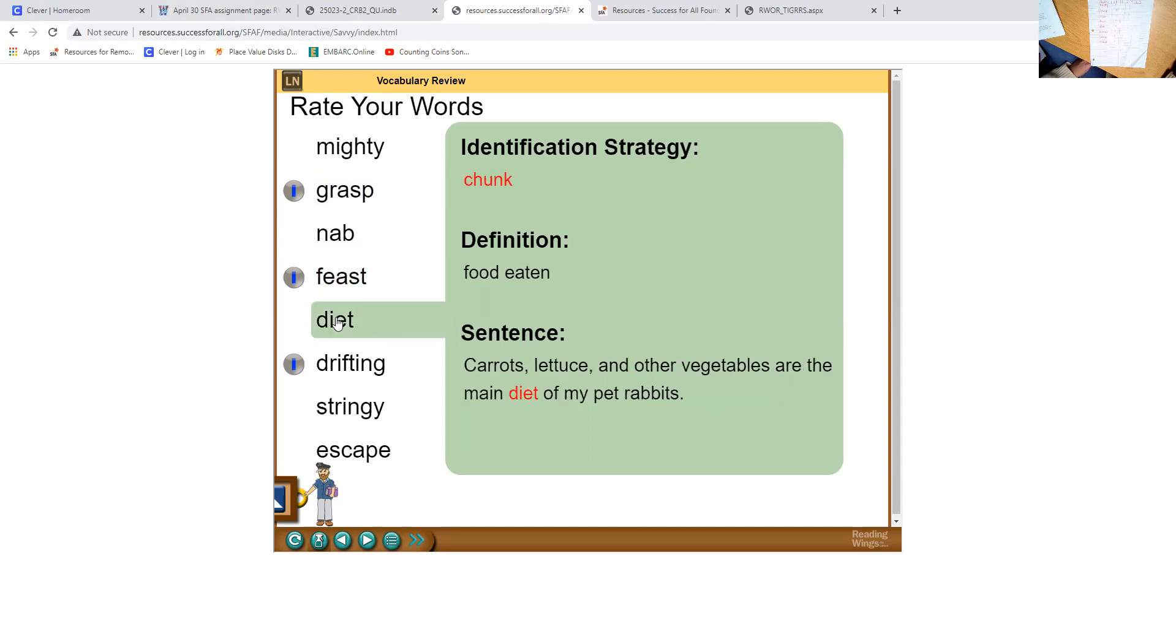Diet means food eaten. Carrots, lettuce, and other vegetables are a main diet of my pet rabbits. Drifting means floating. My helium balloon was drifting away from me in this strong breeze. Stringy means rope-like. The lost dog's fur looks stringy and dirty before we gave him a bath and cut it.